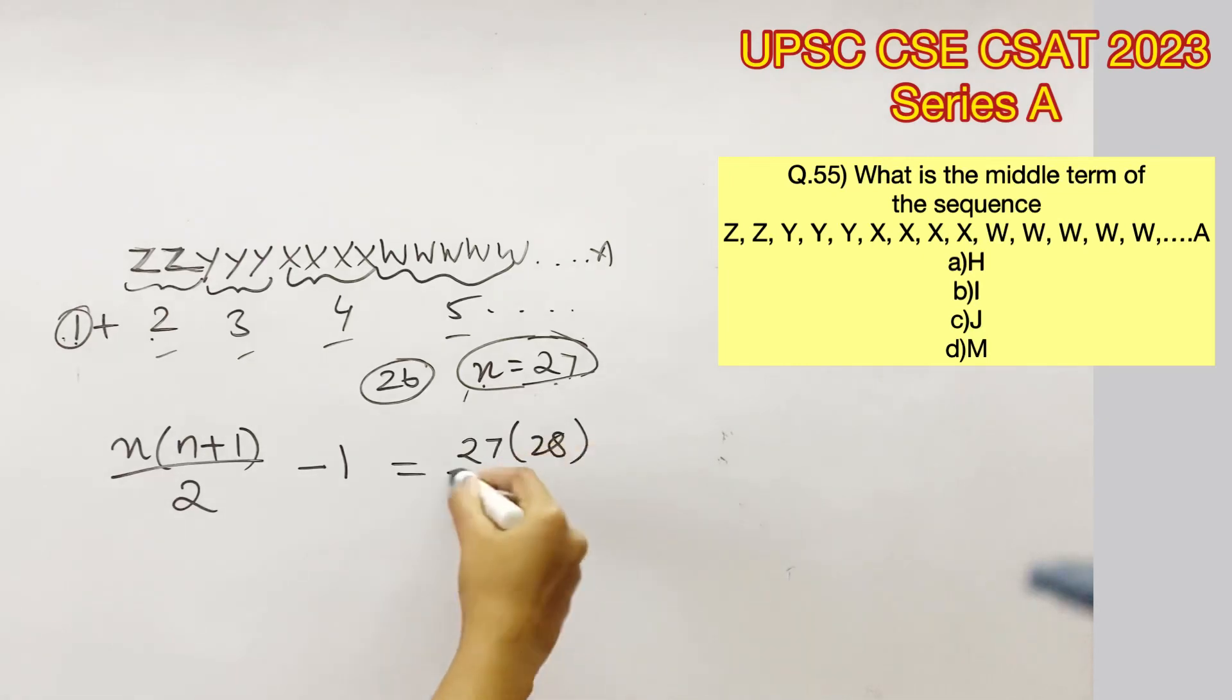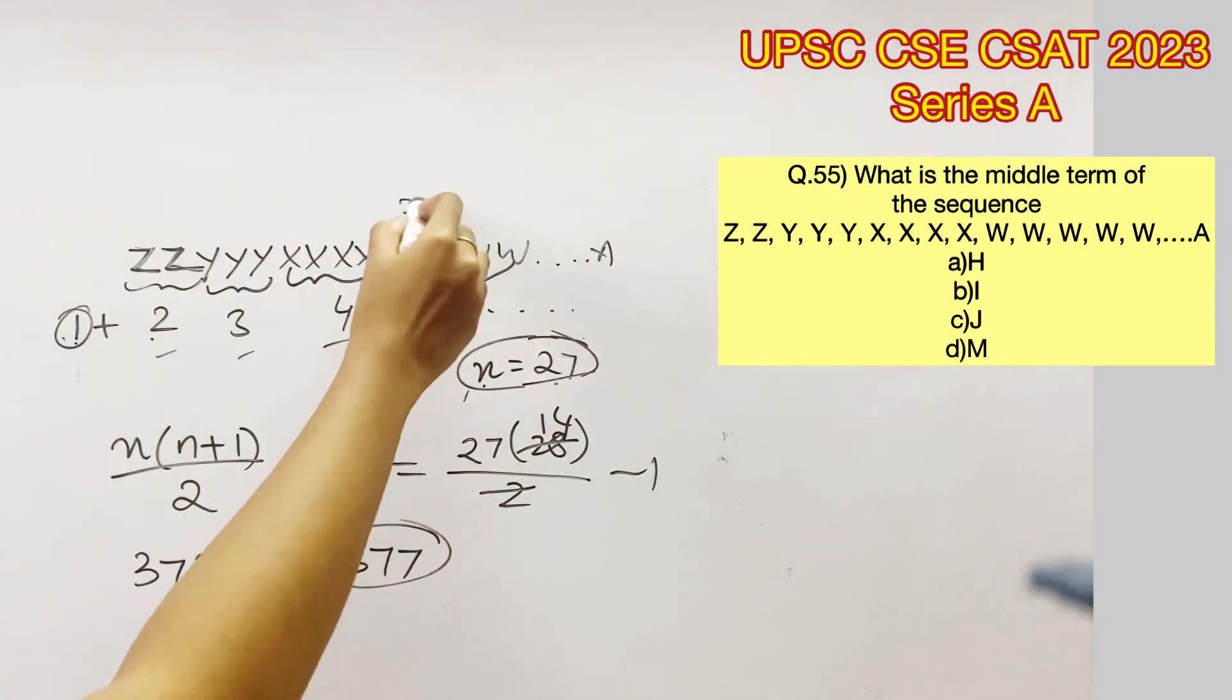Now substituting 27 in the place of N, we get 27 into 28 by 2. Cancelling these out, we get 27 into 14 minus 1, that is 378 minus 1, that is 377. Now we have found out the number of terms, that is 377.